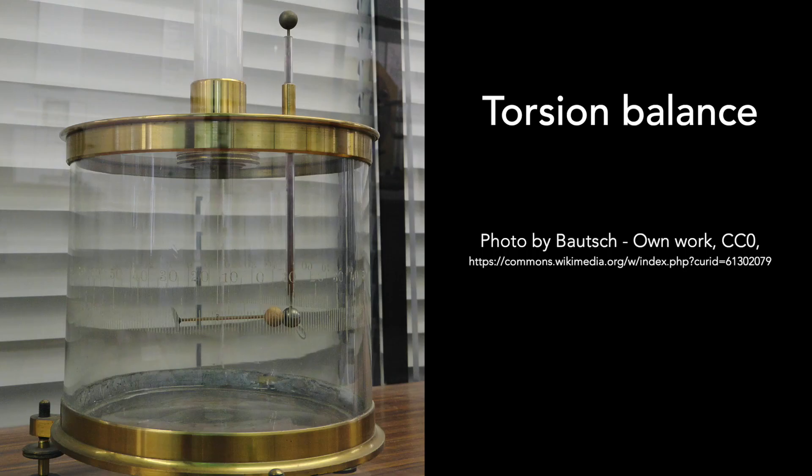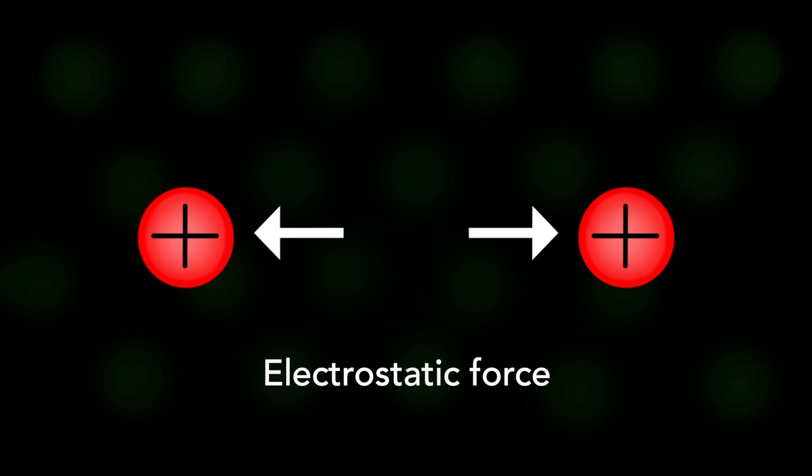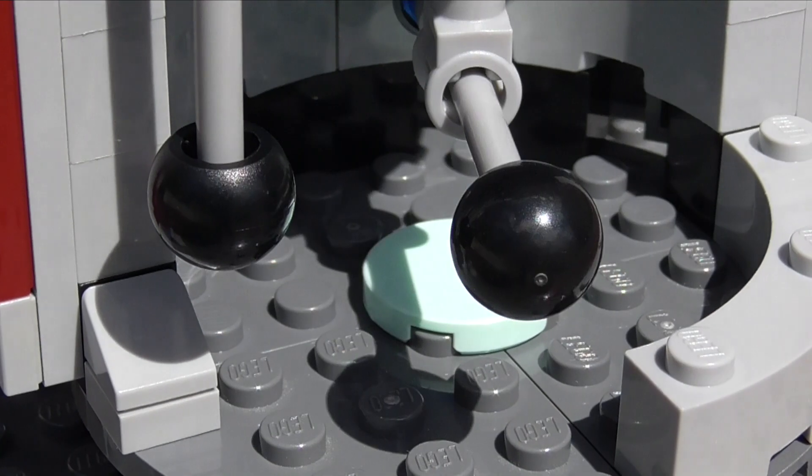With his special torsion balance, Coulomb learned how to measure the size of the force acting between his charged spheres. Today, we call this type of force an electrostatic force. It can be repulsive or attractive, pushing or pulling.